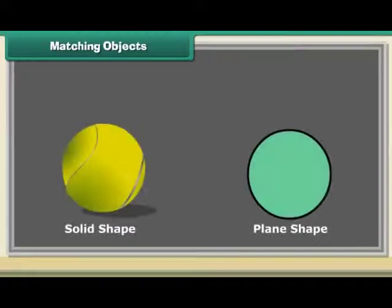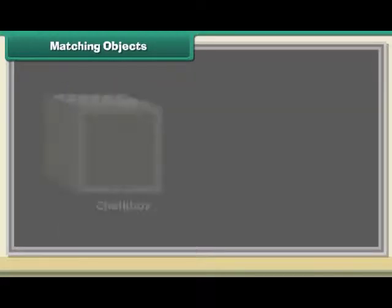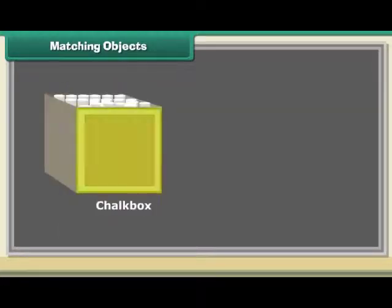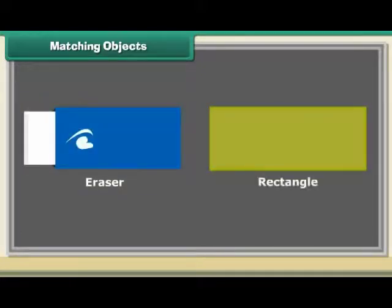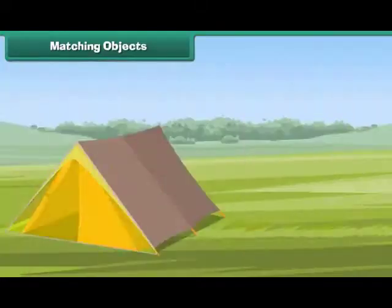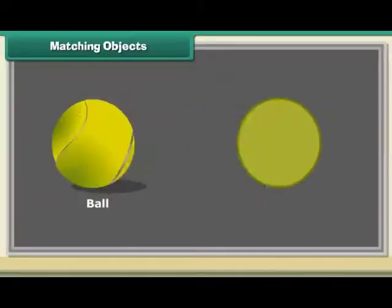Matching objects. We can match solid shapes with plane shapes. We can match a chalk box with a square, an eraser with a rectangle, a tent with a triangle, and a ball with a circle.